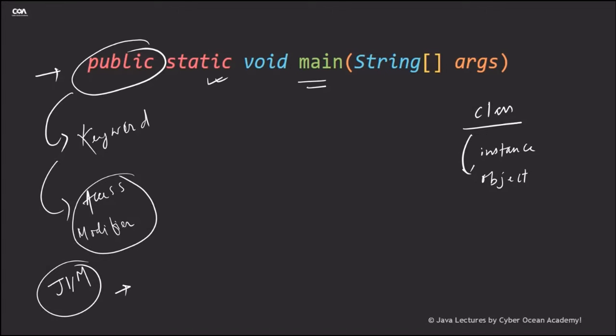So if you want to access it without creating instance of an object, there we have to put this static keyword. And that's why here this method is static. So our Java Virtual Machine directly can access it without creating an instance of object. So the JVM can directly access it without creating an instance.